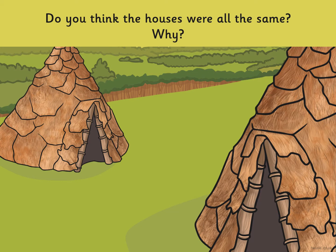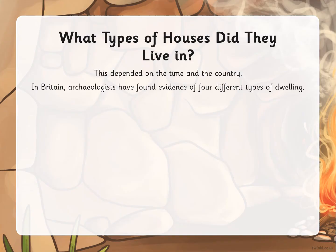During the early Stone Age period they would have had different materials available. Towards the end of the later Stone Age period they were able to use tools and build and make more things. What type of houses did they live in? This depended on the time and country.